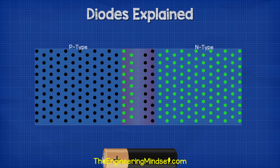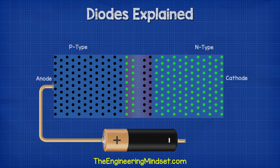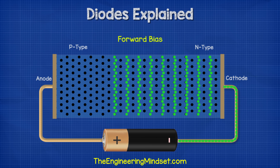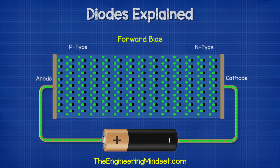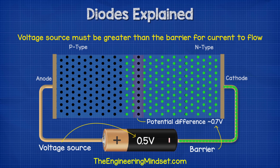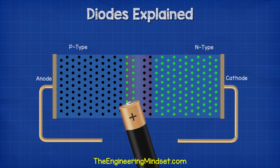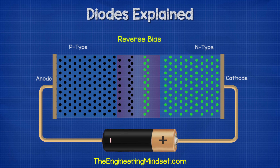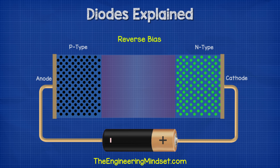When we connect a voltage source across the diode with the anode (p-type) connected to the positive and the cathode (n-type) connected to the negative, this creates a forward bias and allows current to flow. The voltage source has to be greater than the 0.7 volt barrier otherwise the electrons can't make the jump. When we reverse the power supply — positive connected to the n-type cathode and negative to the p-type anode — the holes are pulled towards the negative and the electrons towards the positive, causing the barrier to expand. Therefore the diode acts as an insulator and prevents the flow of current.